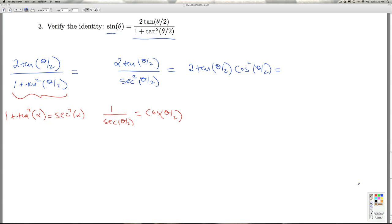Now, tangent I can express as a ratio: sine over cosine. So this equals 2 times sine of theta over 2, over cosine theta over 2. And I've got the cosine squared theta over 2, which I can think of as being divided by 1.